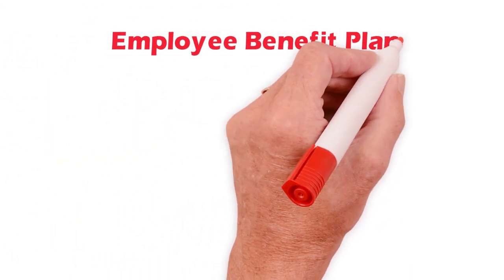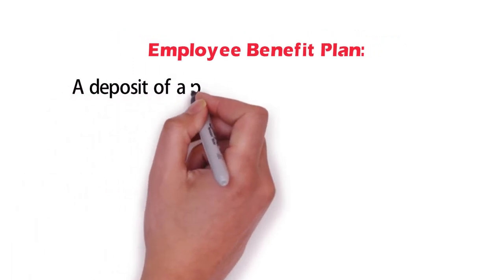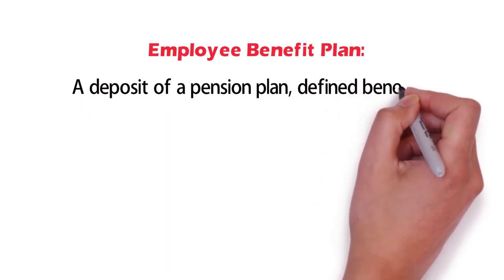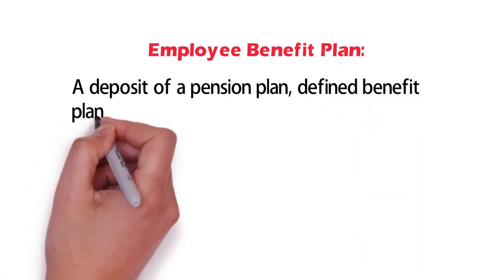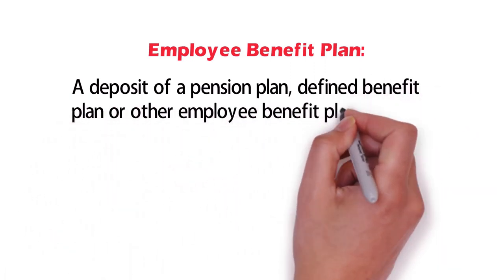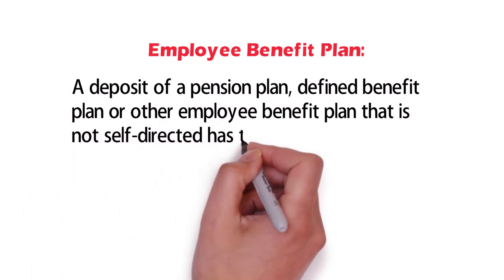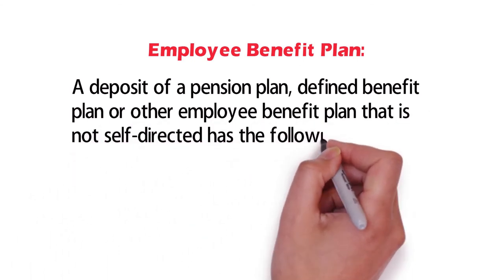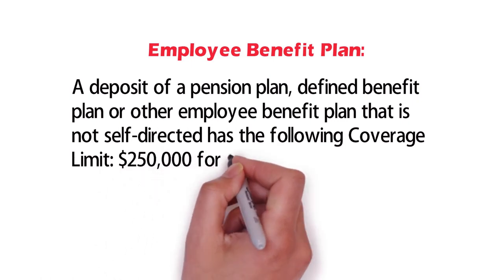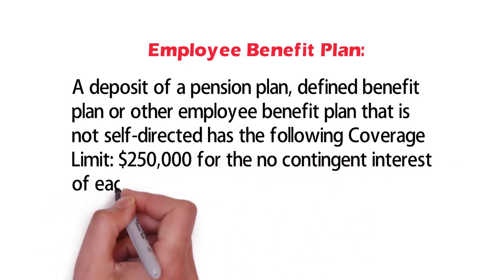An employee benefit plan account — a deposit of a pension plan, defined benefit plan, or other employee benefit plan that is not self-directed — has a coverage limit of $250,000 for the non-contingent interest of each plan participant.